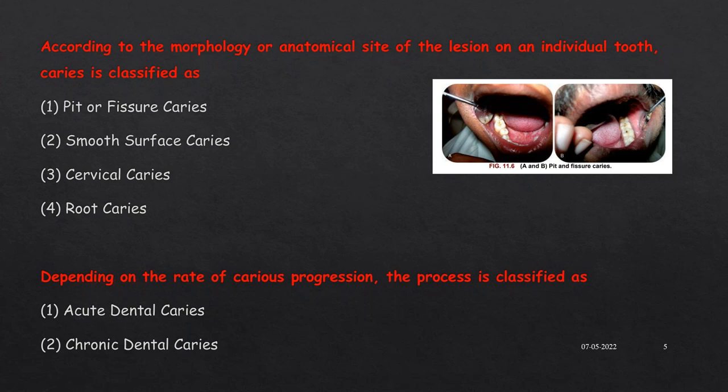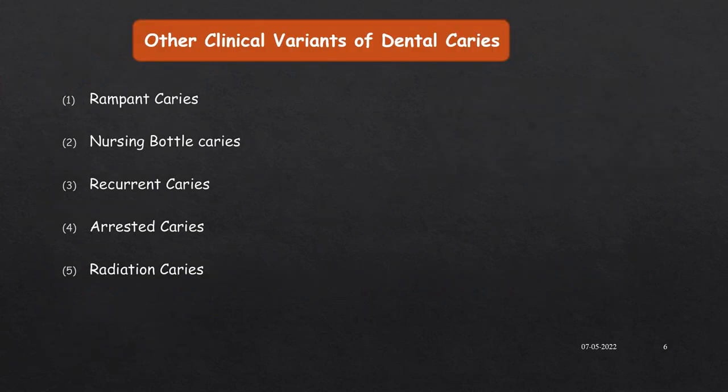Depending on the rate of caries progression, the process is classified as acute dental caries, which spreads rapidly, and chronic dental caries, which is a long-standing caries. Other variants of dental caries include rampant caries, nursing bottle caries, recurrent caries, arrested caries, and radiation caries.